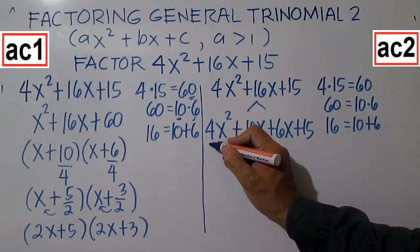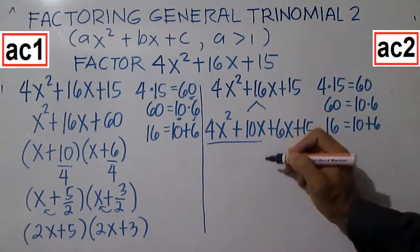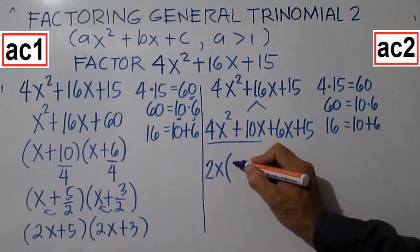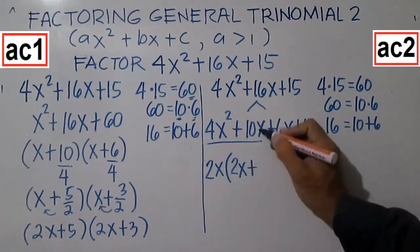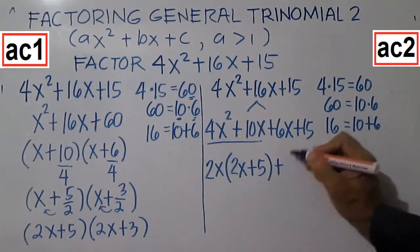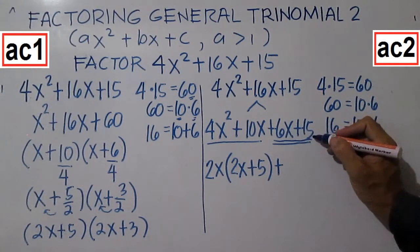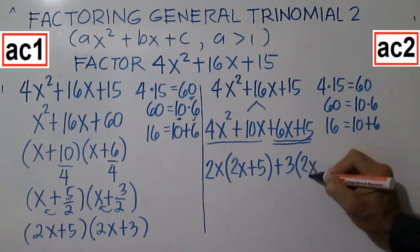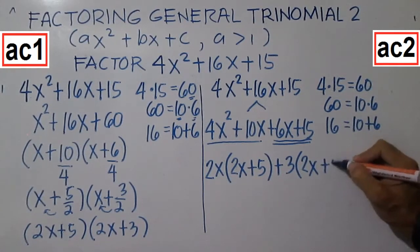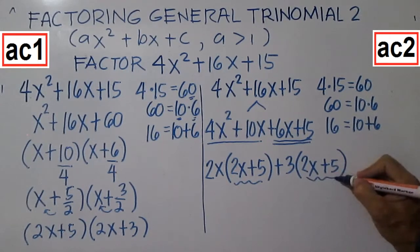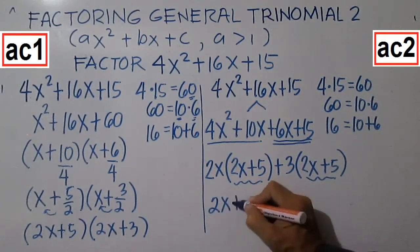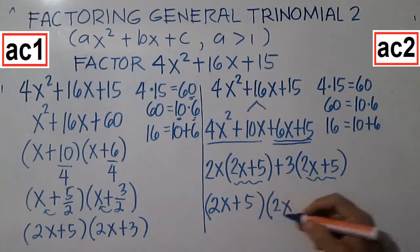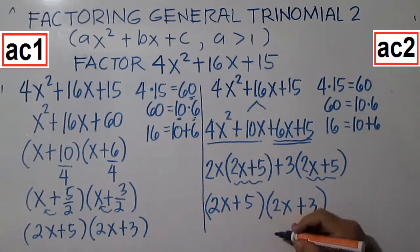Factor the first two terms together and the next two terms together. For 4X squared plus 10X, the common factor is 2X: 4X squared divided by 2X is 2X, and 10X divided by 2X is 5. Then factor 6X plus 15; the common factor is 3: 6X divided by 3 is 2X and 15 divided by 3 is 5. Factor out the common binomial 2X plus 5. Dividing each group by 2X plus 5 gives 2X plus 3. Note that we have the same answer.